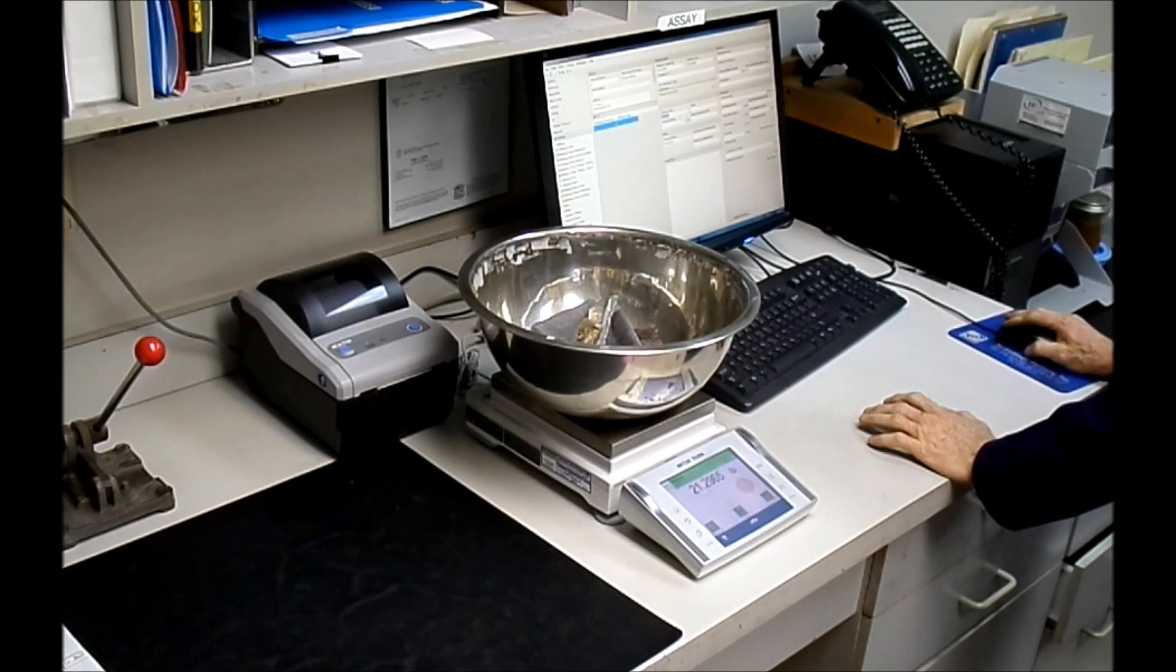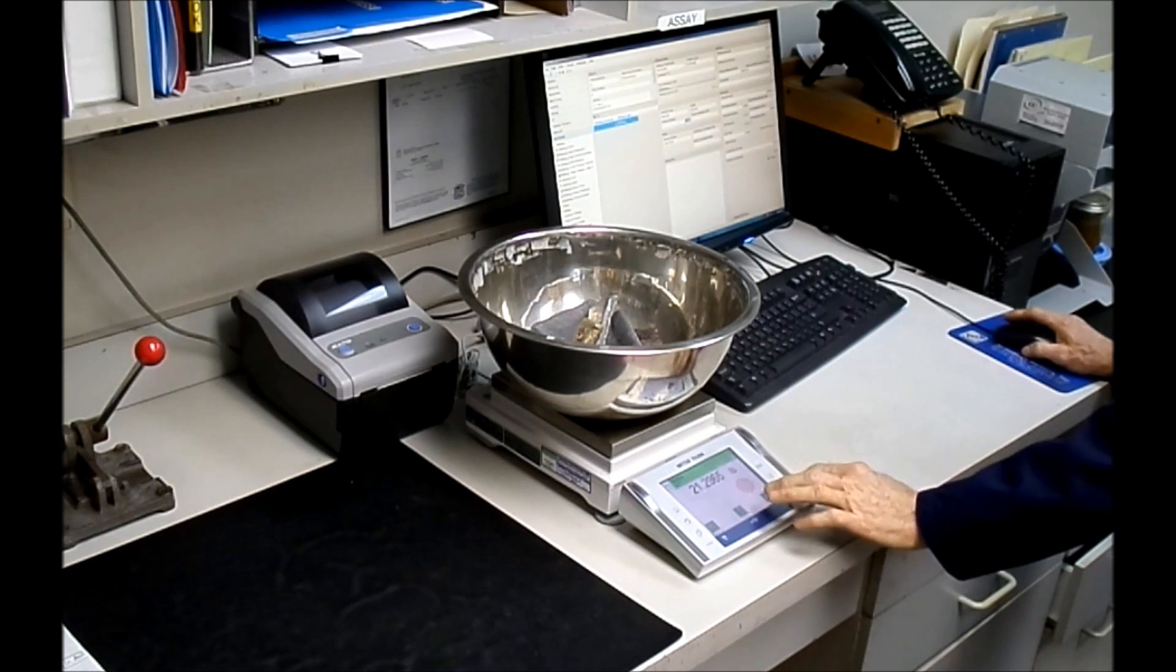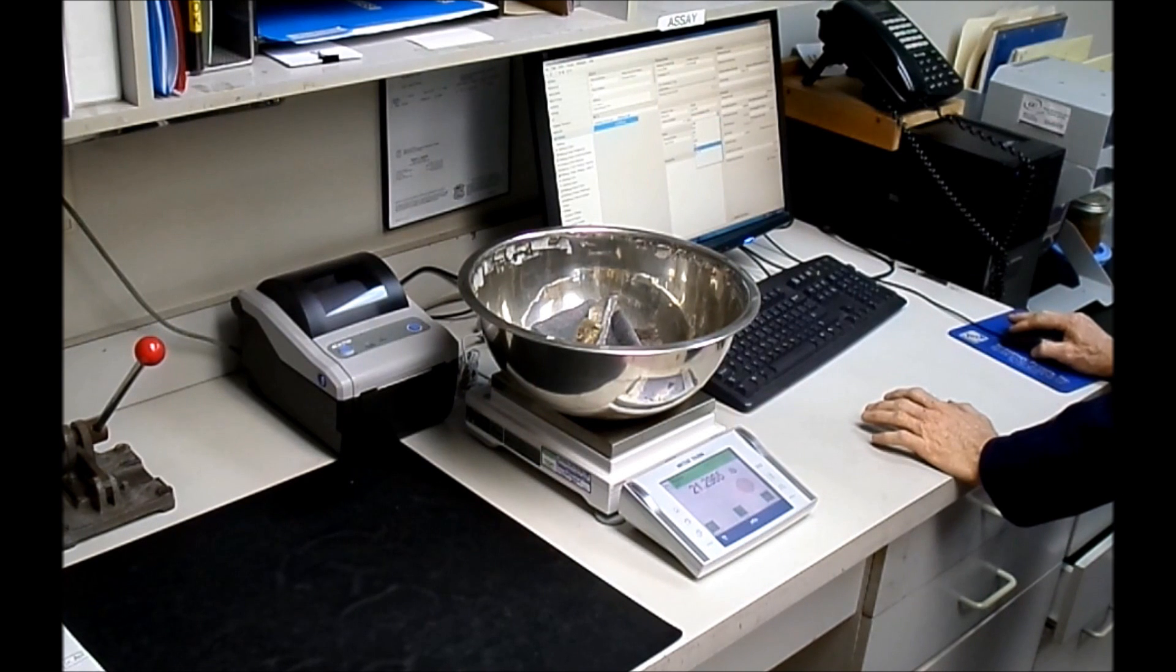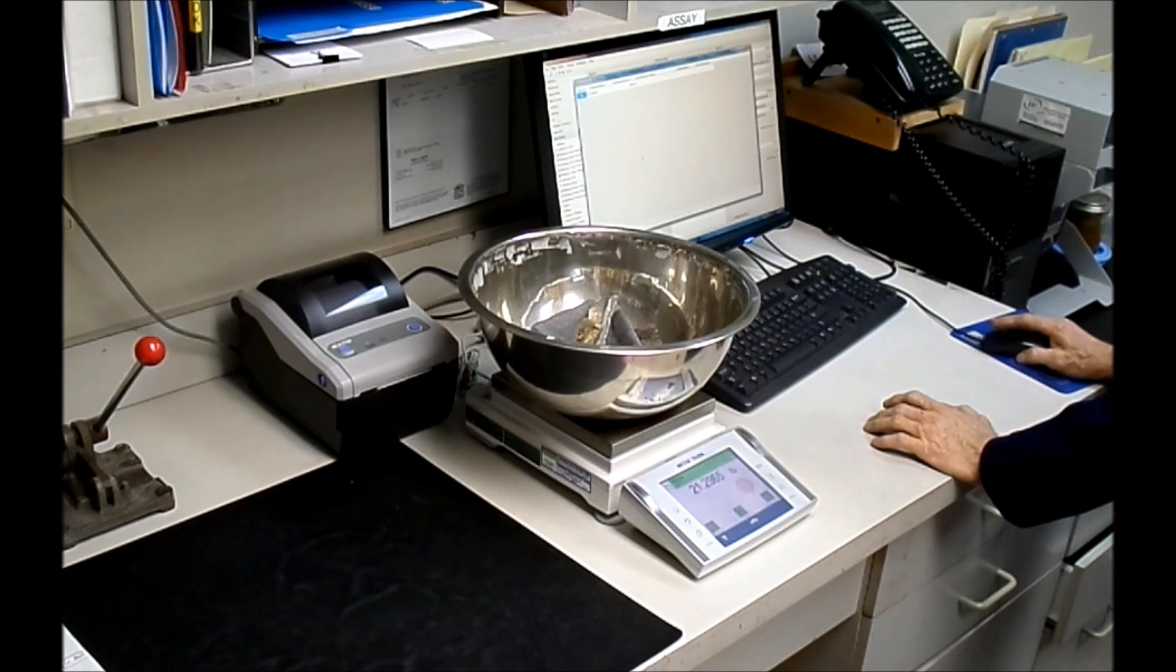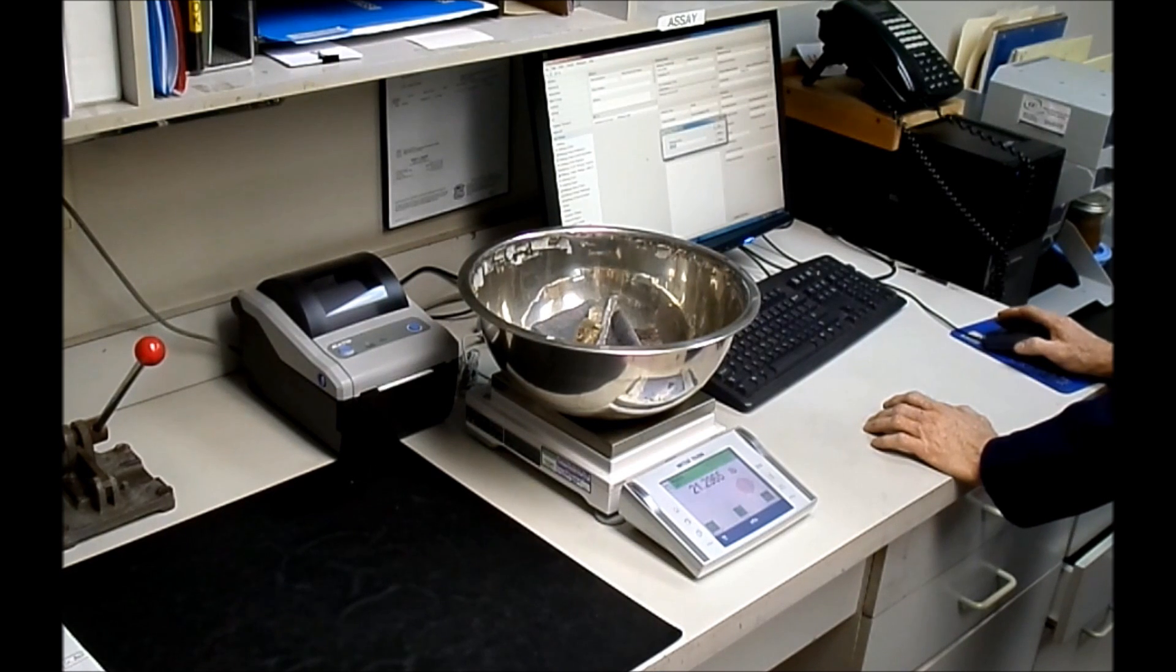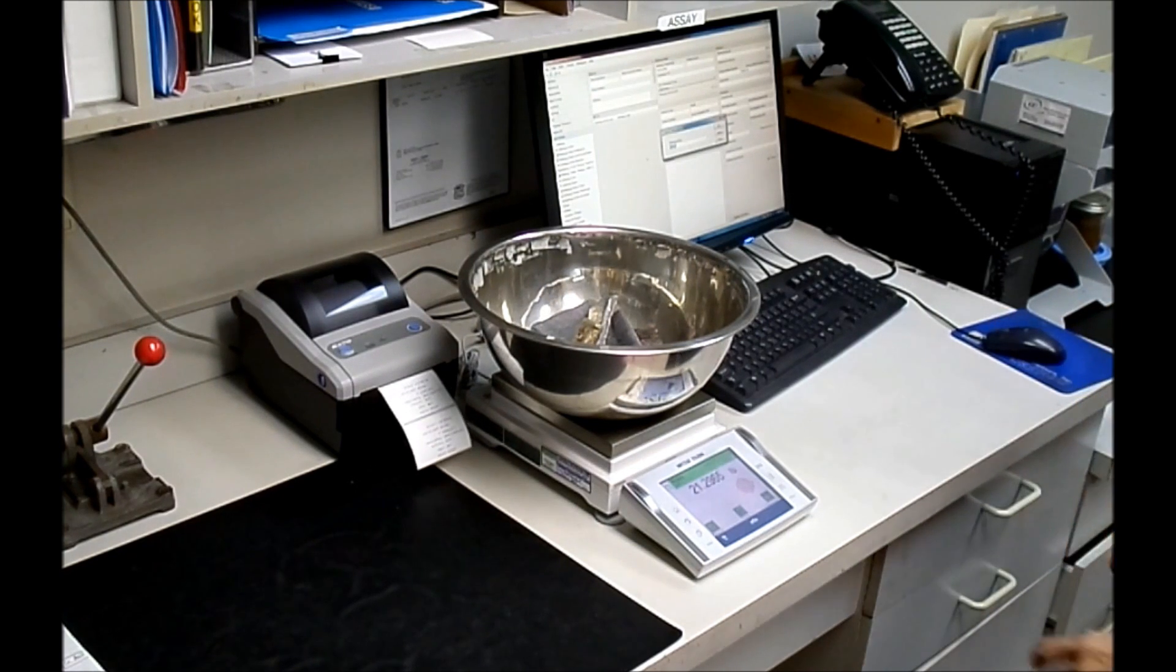The batch we will be melting in this video is a little over 21 pounds of silver. With the push of a button, the weight is recorded in our system and the computer generates a refining order number and prints out two labels, one of which we will affix to the refining container to enable us to track the batch throughout our entire process.